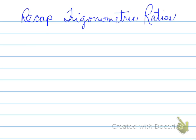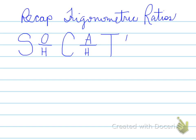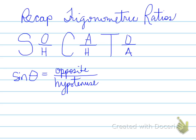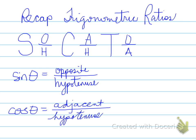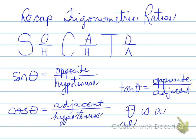Recap: trigonometric ratios from grade 10 — you learned that they are represented by the mnemonic SOH CAH TOA. Sine of an angle is represented by opposite side over the hypotenuse. The cosine of an angle is represented by the adjacent side over the hypotenuse. Finally, the tangent ratio is represented by the ratio opposite side over the adjacent side.